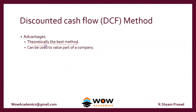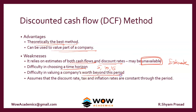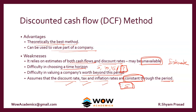Advantages: this is the theoretically best method, and it can be used to value a part of a company. Weaknesses: it relies on cash flows and discount rates, both of which can be unavailable and must be estimated. There is difficulty in choosing a time horizon — the value of a business changes with the horizon selected; 5 years, 10 years, and 15 years will all give different values. There is also difficulty in valuing a company's worth beyond the chosen period. Finally, it assumes that the discount rate, tax, and inflation remain constant throughout the valuation period.